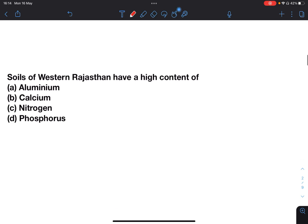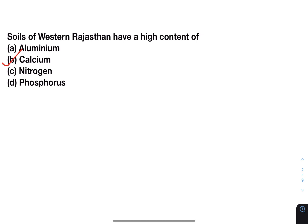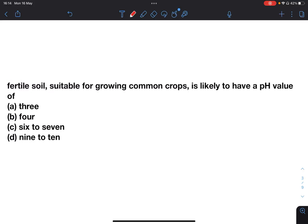First question: Soils of western Rajasthan have a high content of aluminium, calcium, nitrogen, or phosphorus? Answer is B, calcium. Fertile soil suitable for growing common crops is likely to have a pH value of three, four, six to seven, or nine to ten? Answer is six to seven.